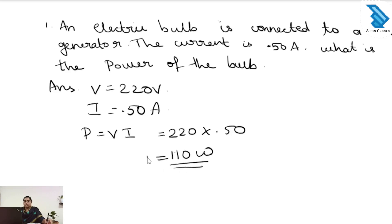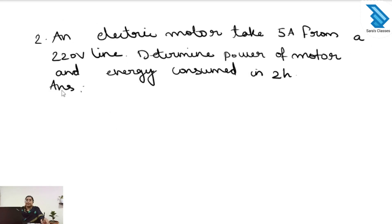The unit of power is watt, so the power is 110 watt. We can go to the next problem. Second question: an electric motor takes 5 ampere from a 220 volt line. Determine the power of the motor and the energy consumed in 2 hours.